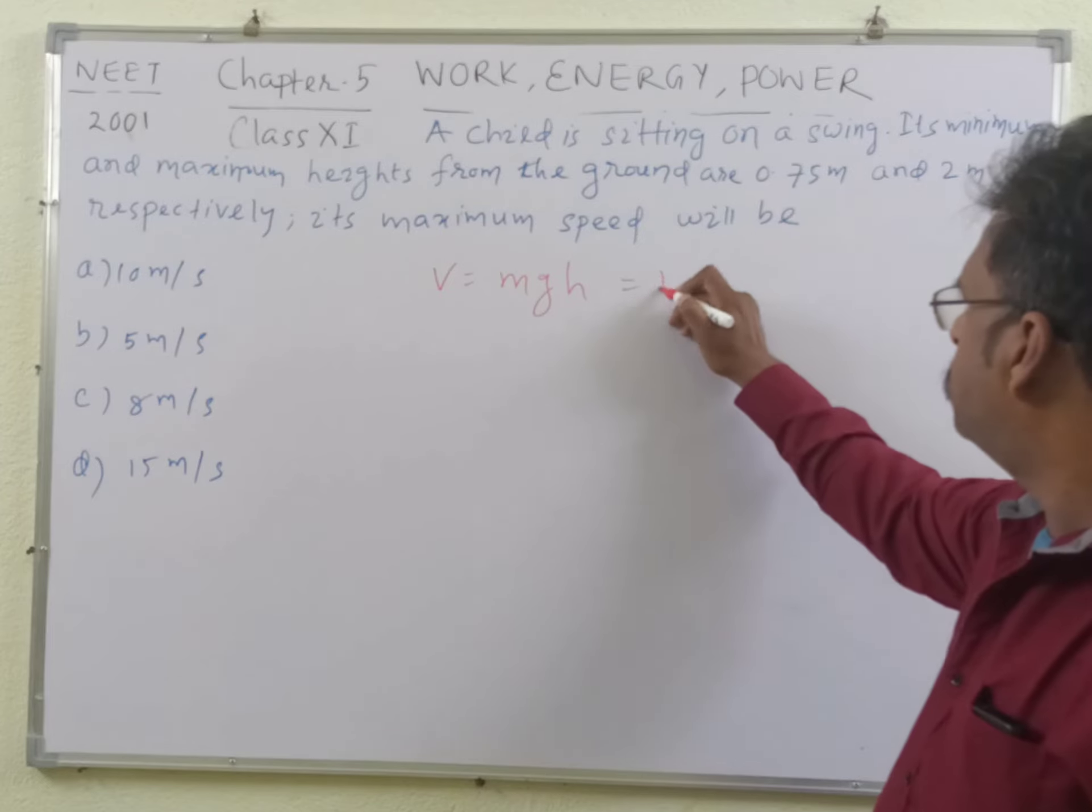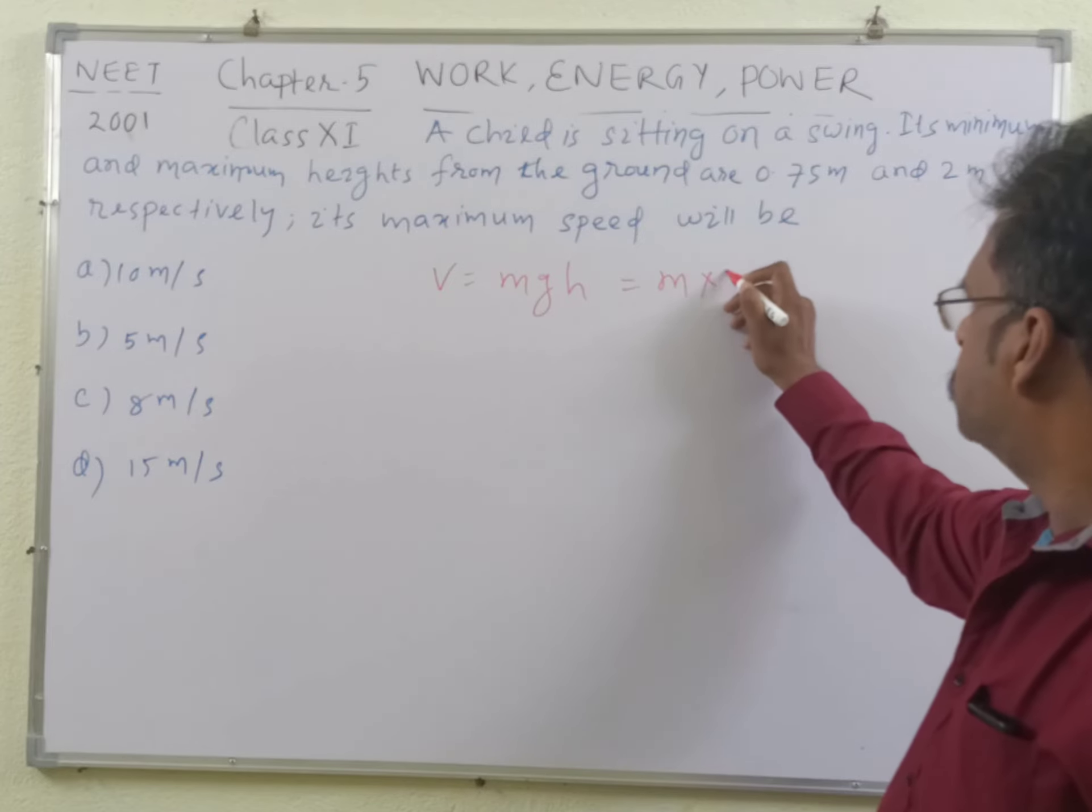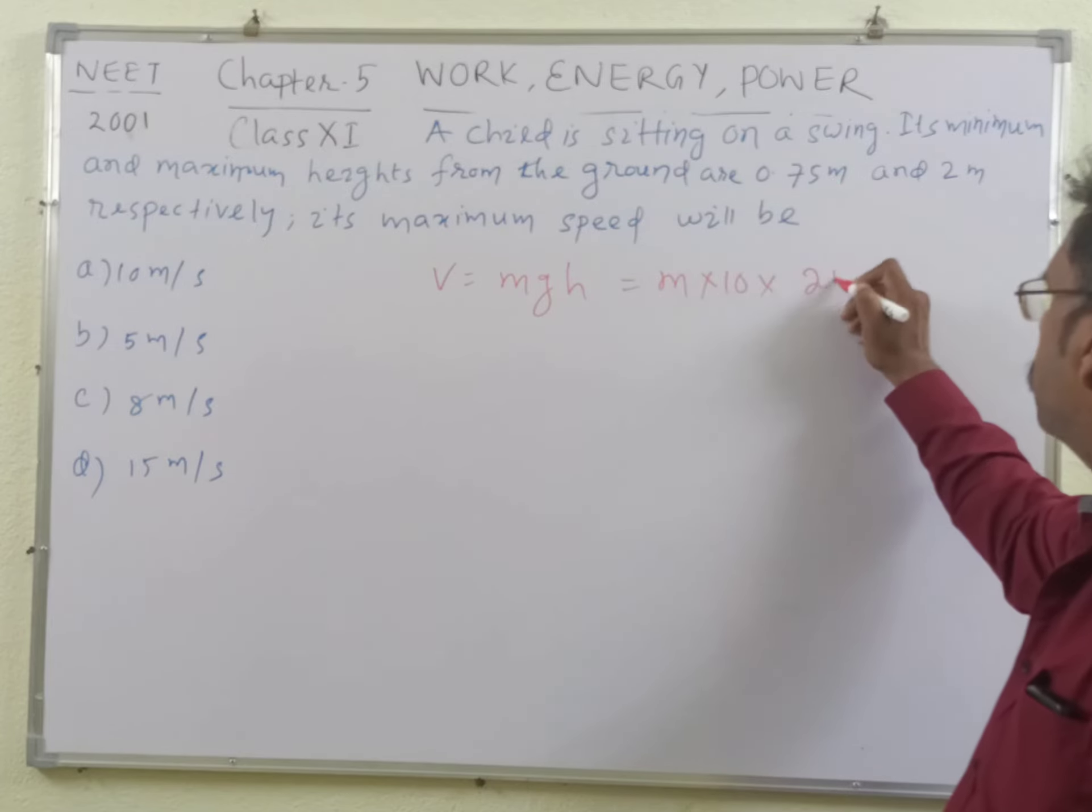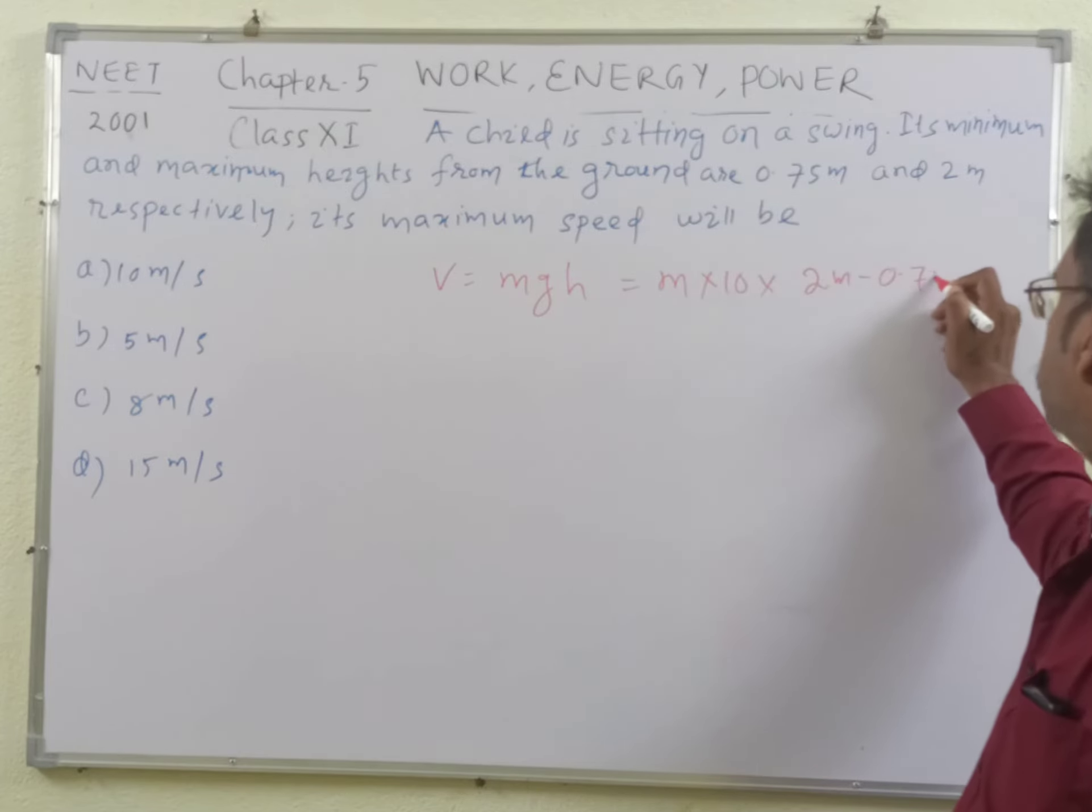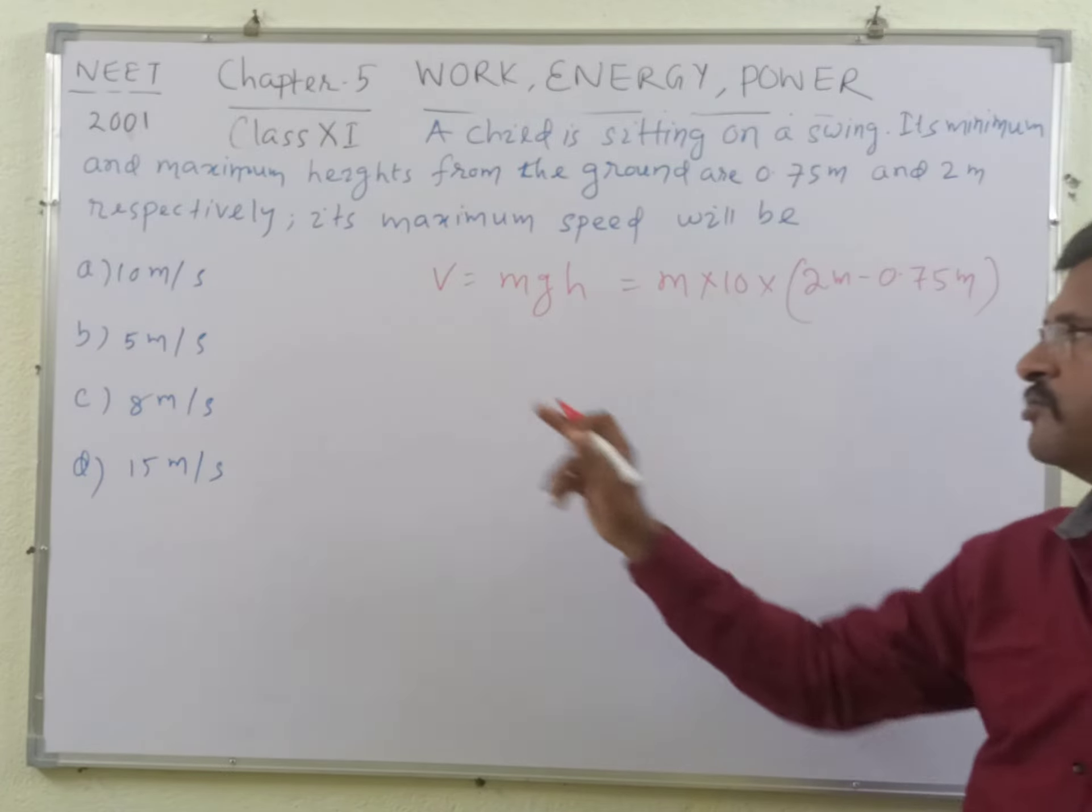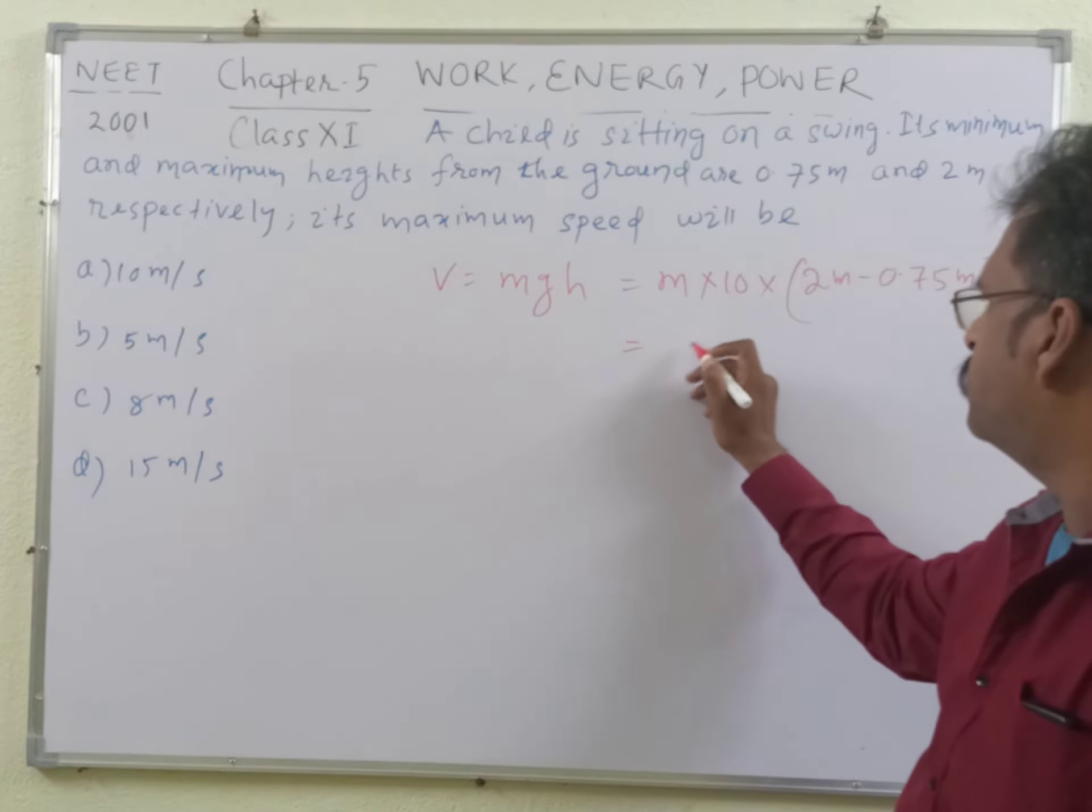This is m into g means 10 meter per second square and what is height? Height is 2 meter minus 0.75 meter. So this is the maximum height and the minimum height, so this is the maximum potential energy, student.